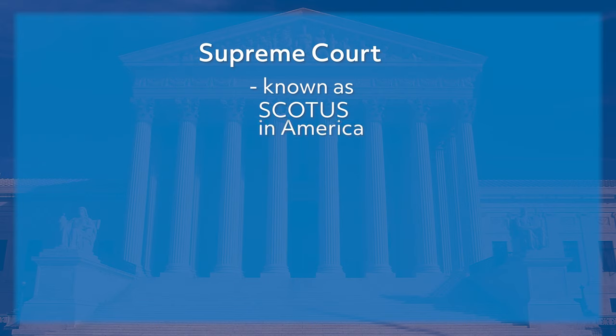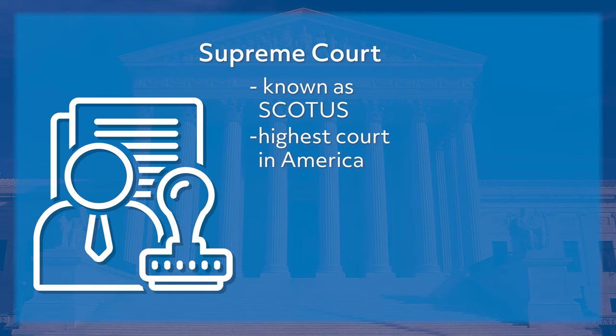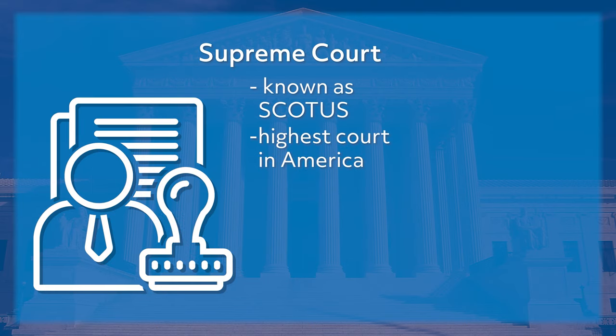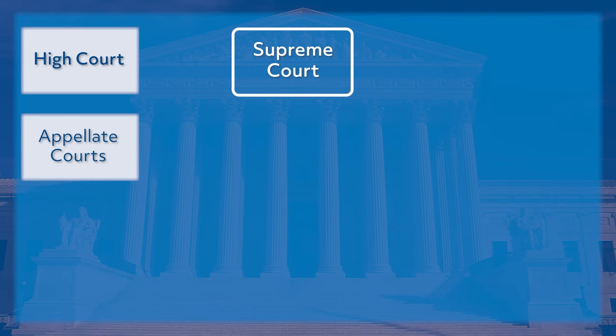The Supreme Court, often referred to as SCOTUS, is the highest court in America, meaning it has the final say on cases within its jurisdiction. It sits atop a structure of appellate — meaning appeals courts — which are a chain of federal courts known as circuit courts that decide all cases of federal law in America.